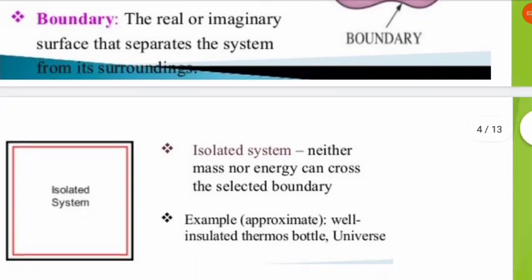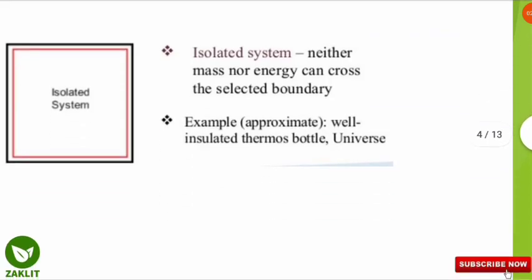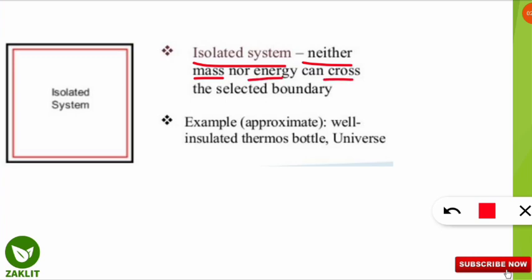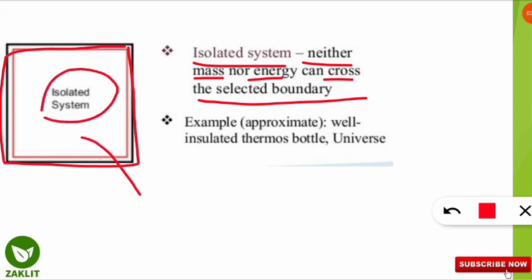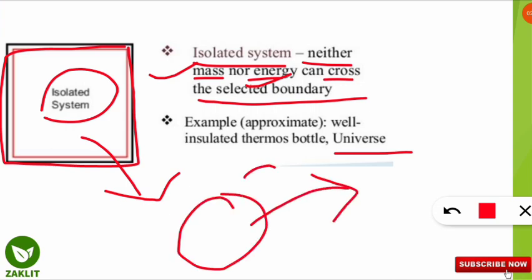Now let's look at different kinds of systems. An isolated system means neither mass nor energy can cross the selected boundary — nothing can be transferred across it. An example is the universe: all energy stays inside its boundary, and neither energy nor mass can move outside the boundary of the universe.